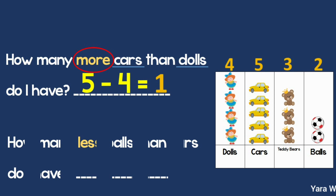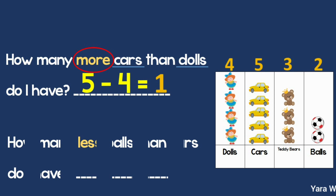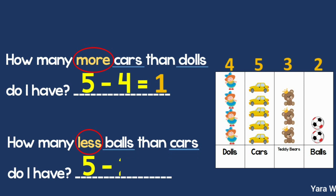Let's look at the next question. How many less footballs than cars do I have? First, what am I comparing? Footballs and cars. I have 2 balls and 5 cars. I can't write 2 minus 5, right? Subtraction always starts with the bigger number. So, 5 cars minus 2 balls equals 3. There are 3 less balls than cars.